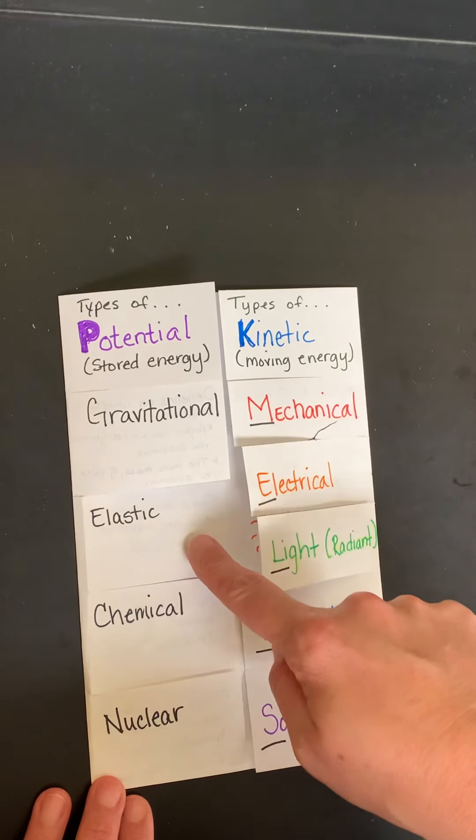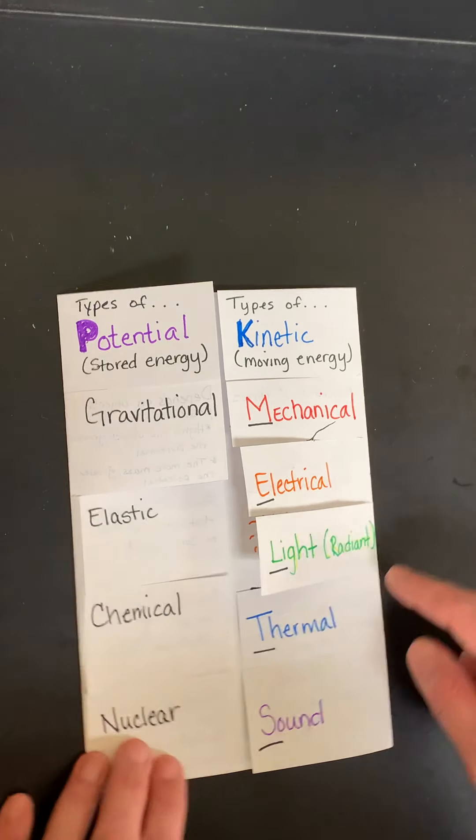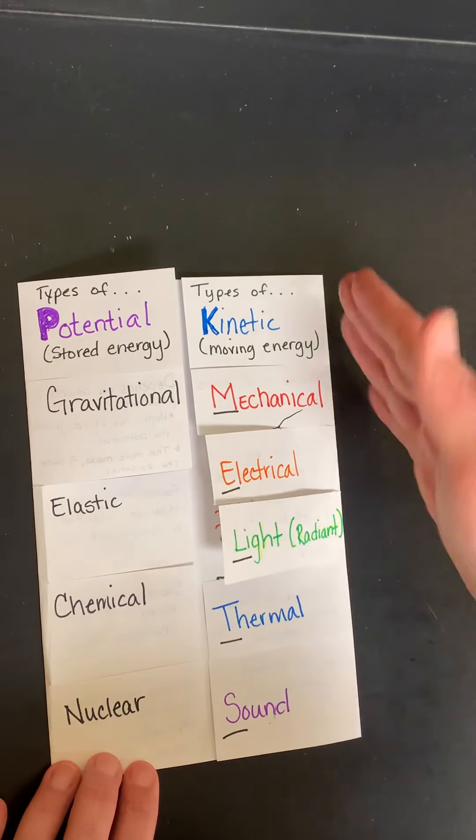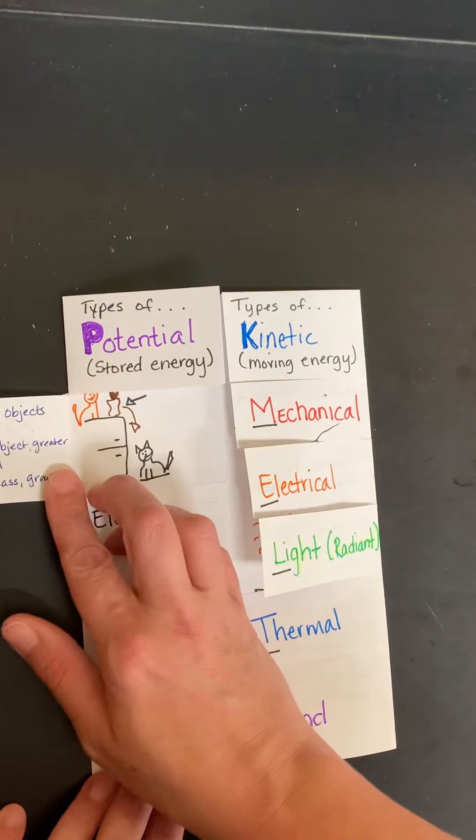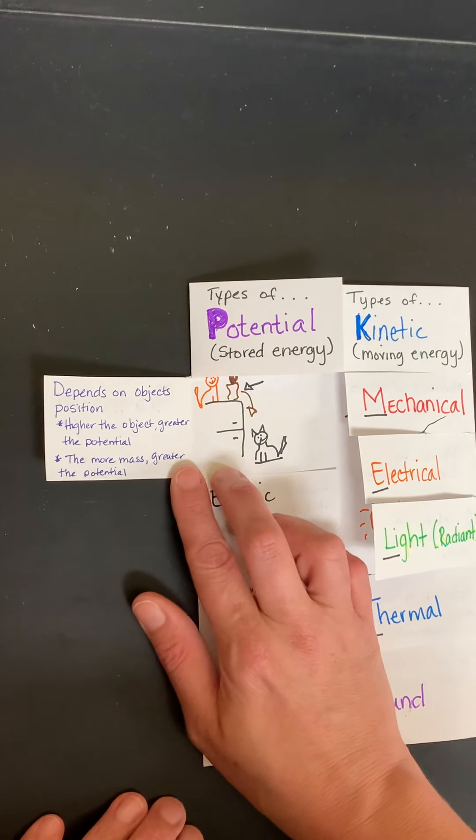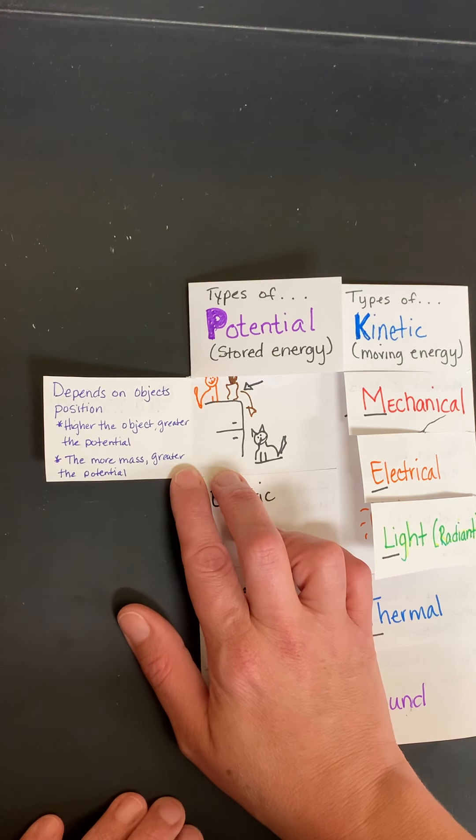And then there are five types of kinetic energy, which we'll get to in a minute. Let's go over potential first. So gravitational potential energy depends on the object's position. The higher the object is, the greater the potential. Also, the more mass an object has, the greater its potential.